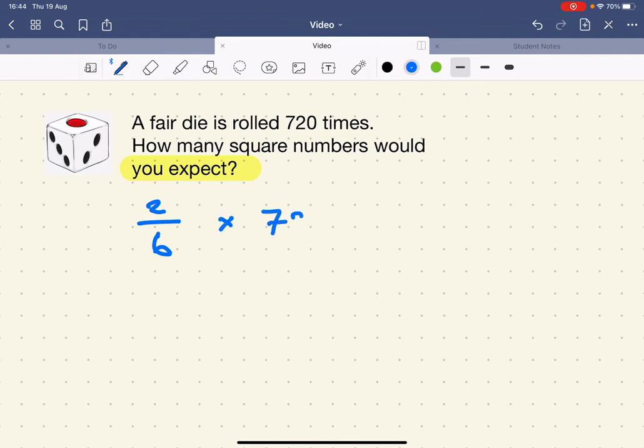Then we simply multiply it by how many times we're doing this experiment. The probability times how many times we're doing that experiment. All we need to do now is go to our calculator and do 2 divided by 6 times 720, and that gives me 240. So I would expect to get 240.